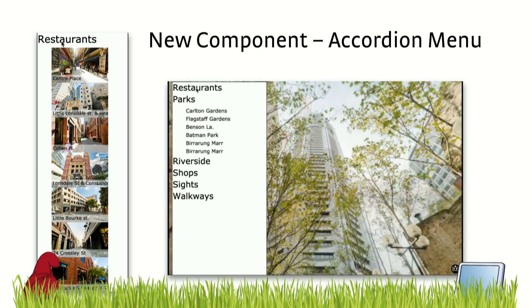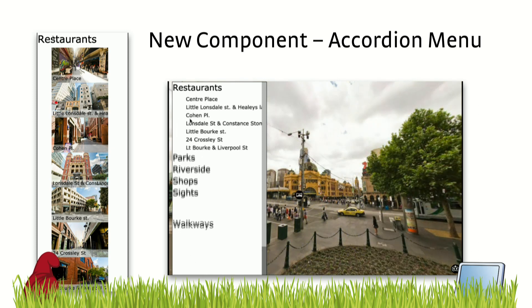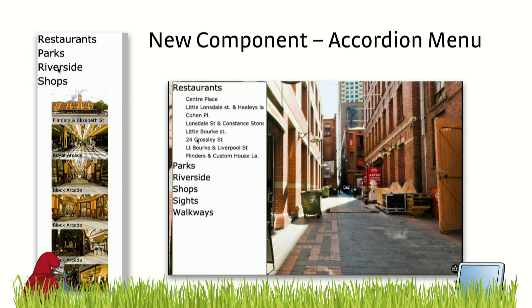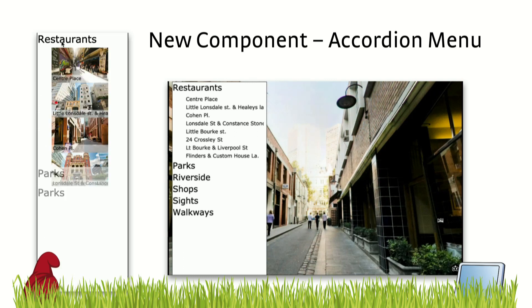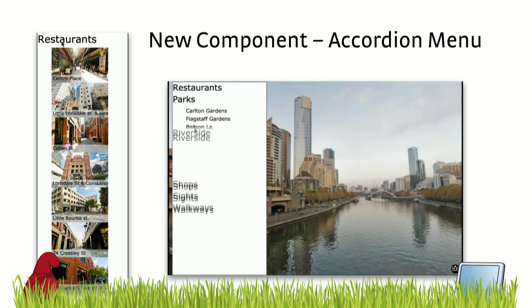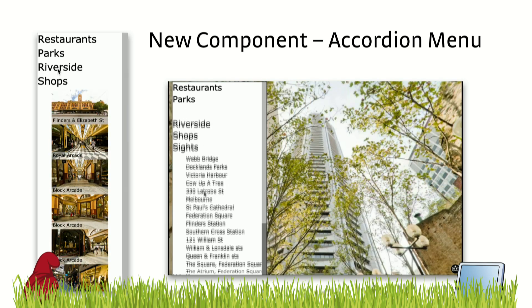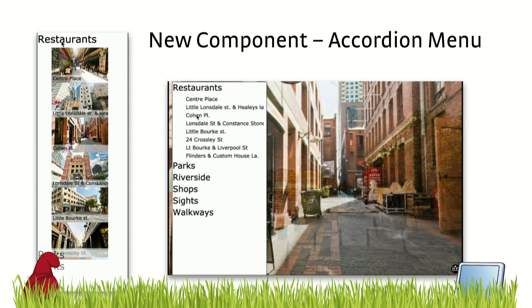Another often requested feature is an accordion menu. The new version has the missing parts that we needed to build such a thing. As you can see, it's highly customizable — you can have images there, or you can just have the text — and you have the sliding effect.